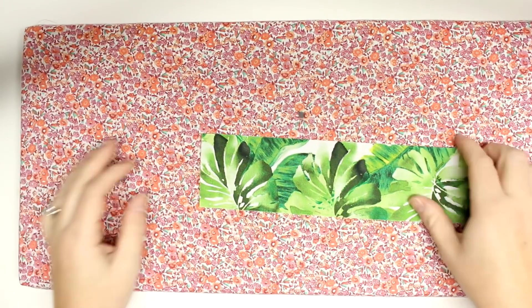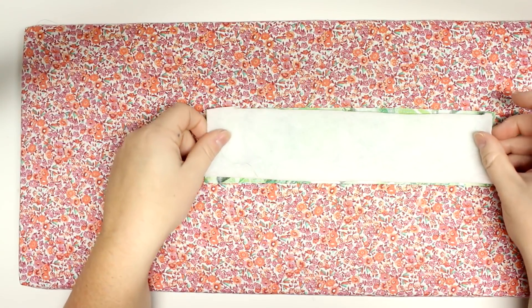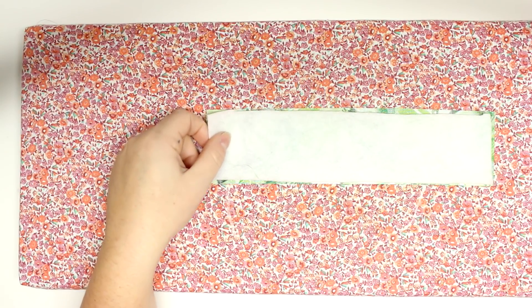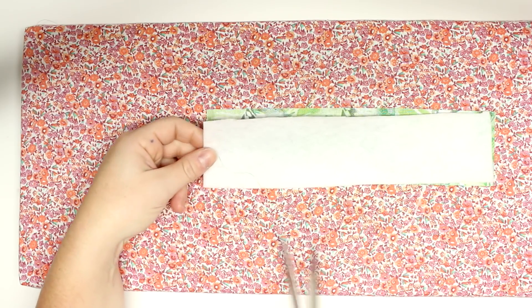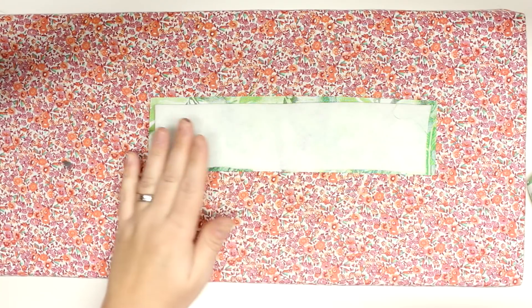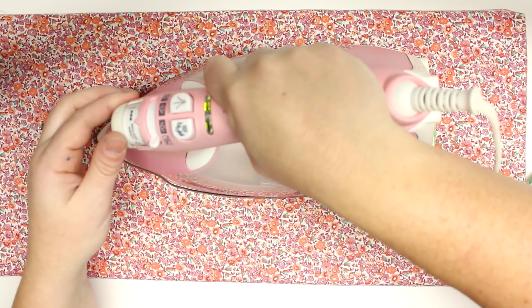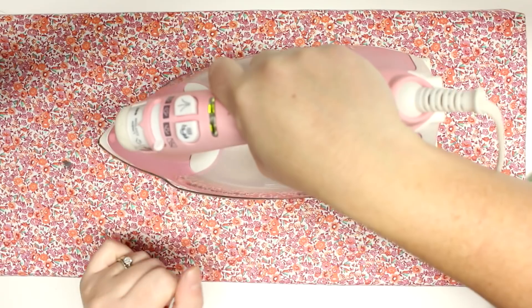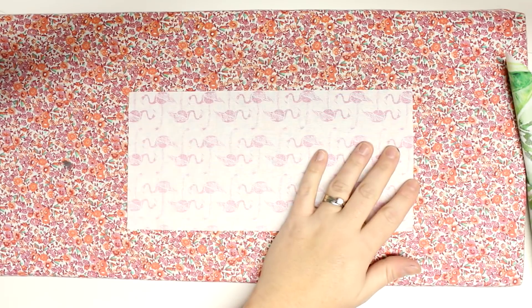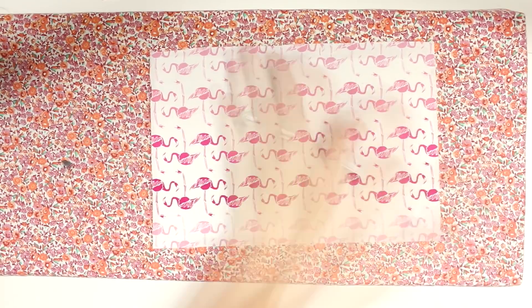So the first thing I'm going to do is put fusible fleece on the backs of all my front pieces. That will be what helps protect your device. So if you wanted to use a quilt batting or double layer it, if you want to protect your case a little bit more, you can put as much as you want or as little as you want. But I'm just going to be doing one layer and I think that is fine for my device.